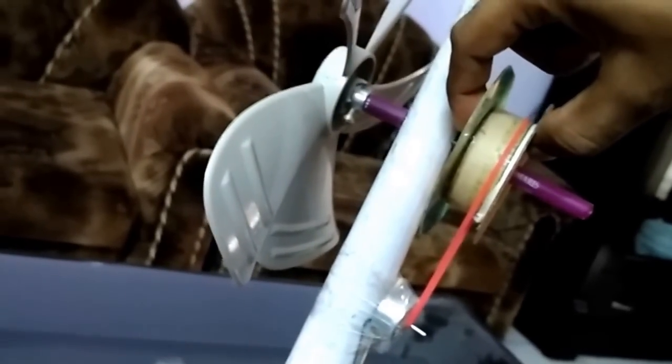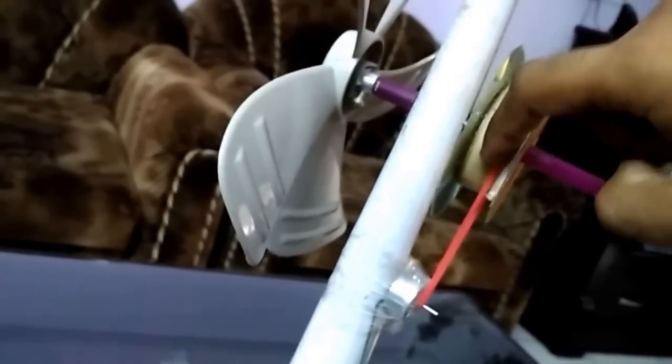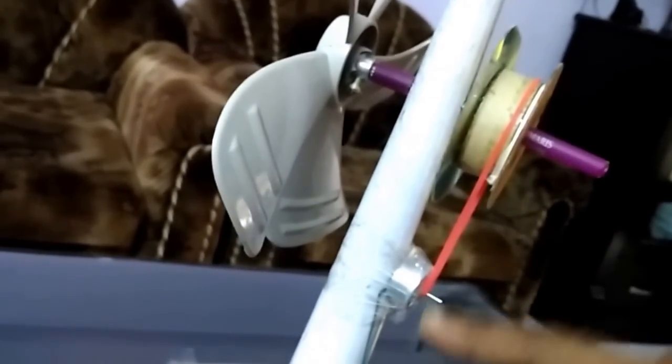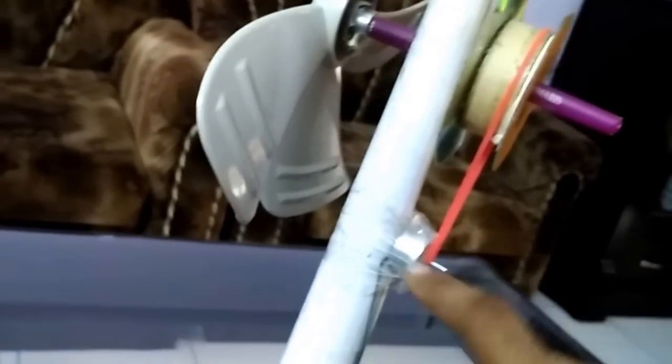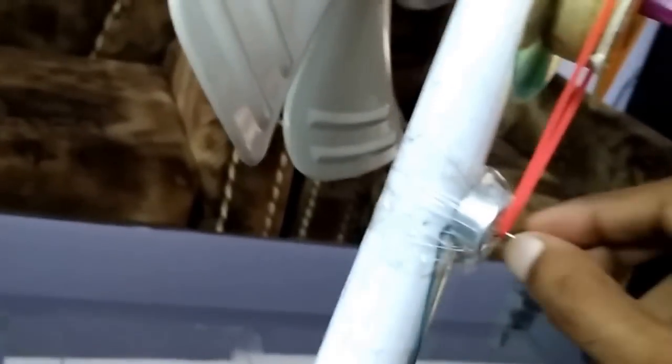We pasted two CDs on both sides so that the rubber band doesn't slip and we wound up this rubber band over the wooden block and this small shaft, and we fixed it with this pole using a wide cello tape.